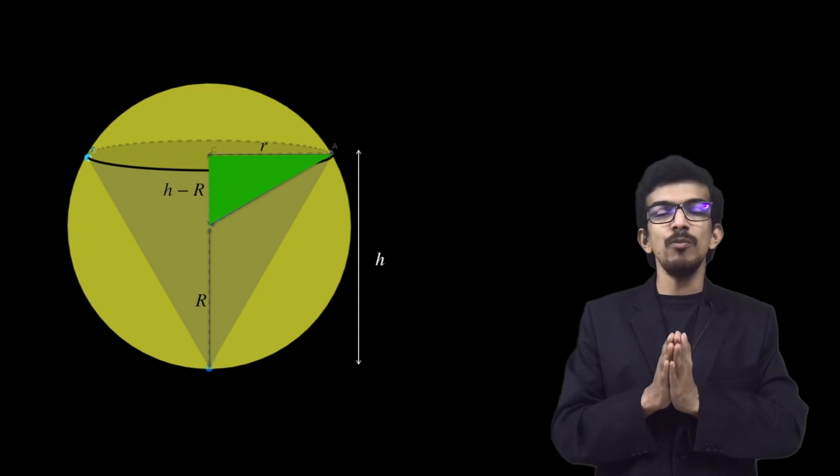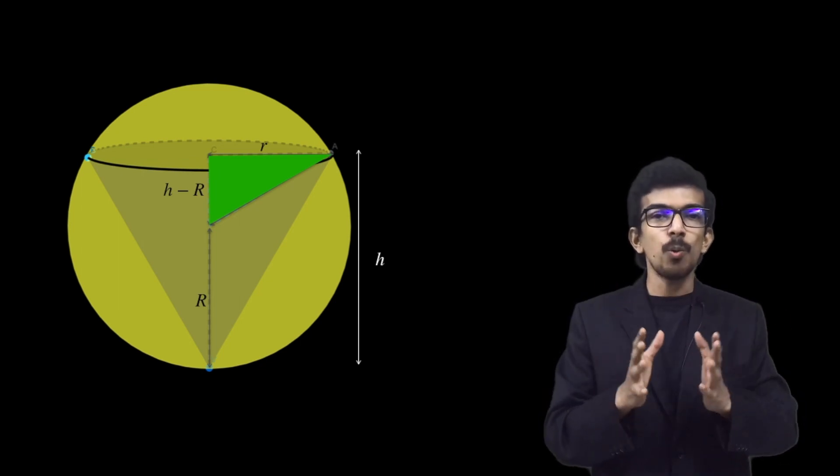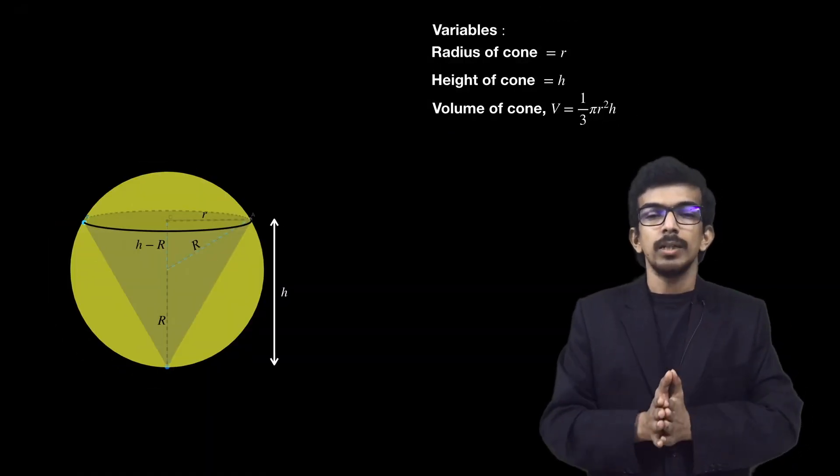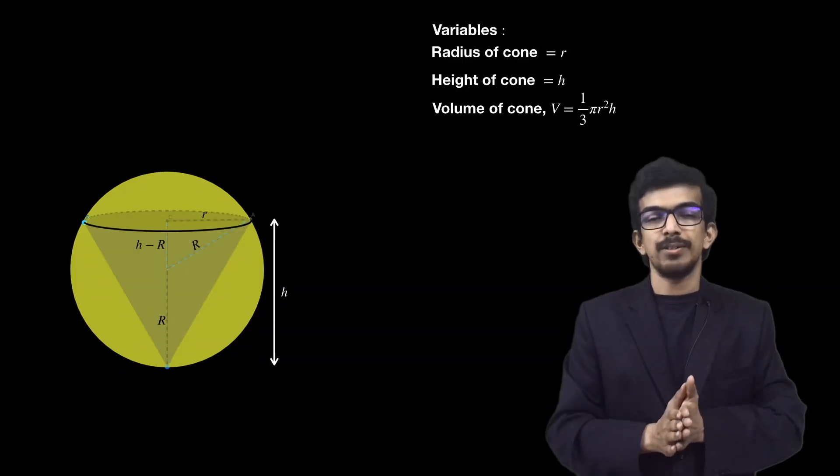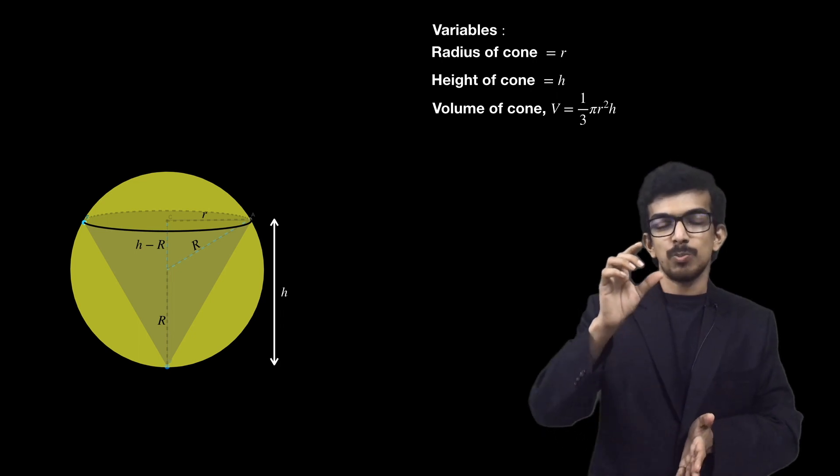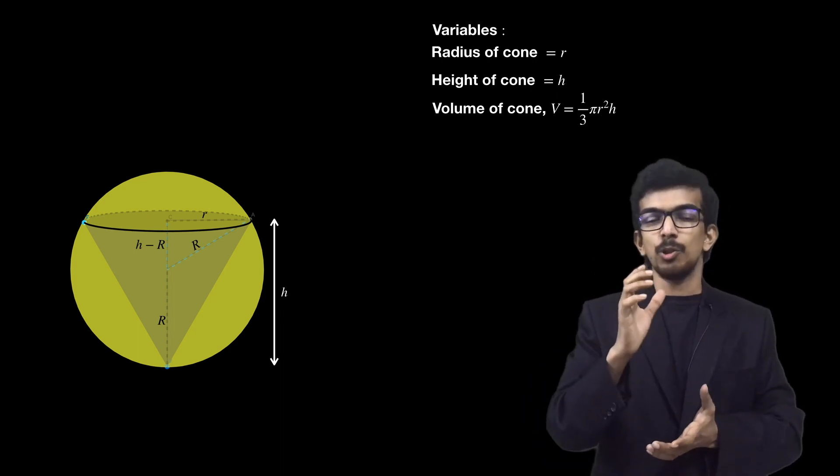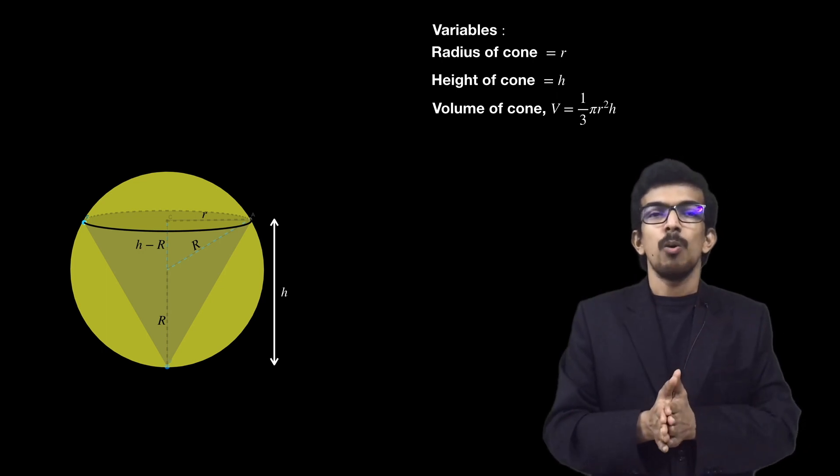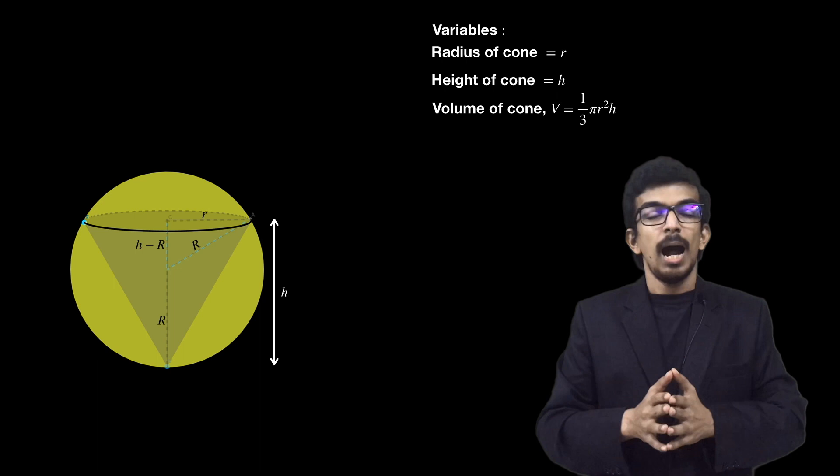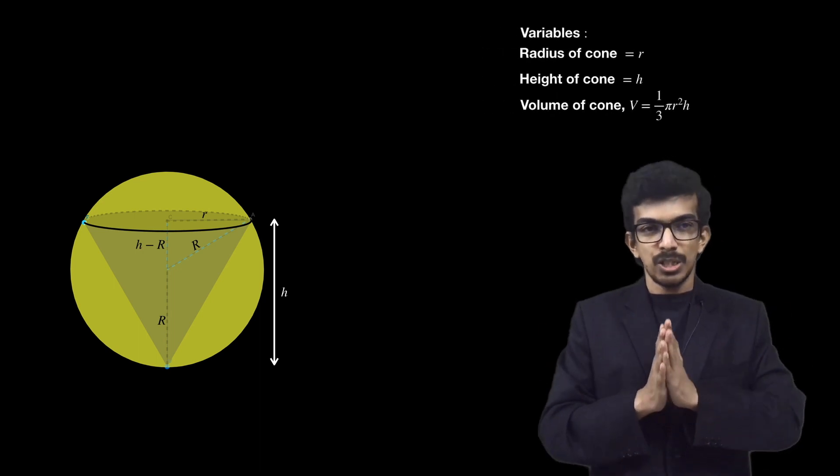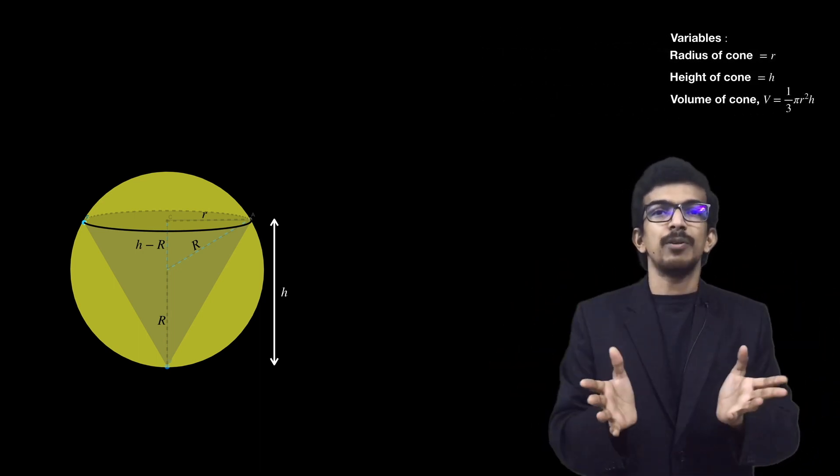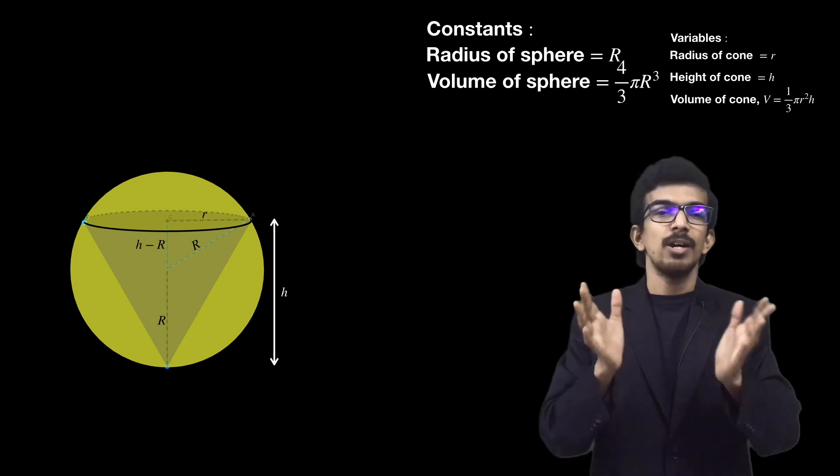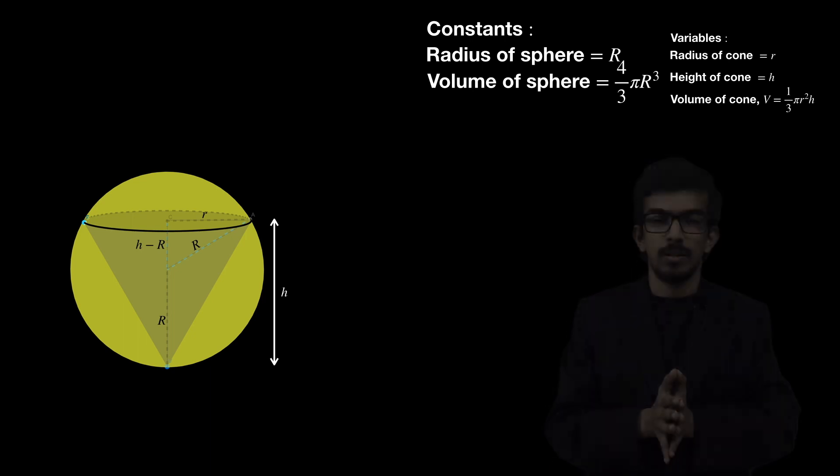Before solving this question, we need to know what are the variables and what are the constants. Variables are r (the radius of the cone), h (the height of the cone), and volume of the cone which is (1/3)πr²h. What are the constants? Since we have a fixed sphere given, the radius of the sphere and volume of the sphere are fixed constants.